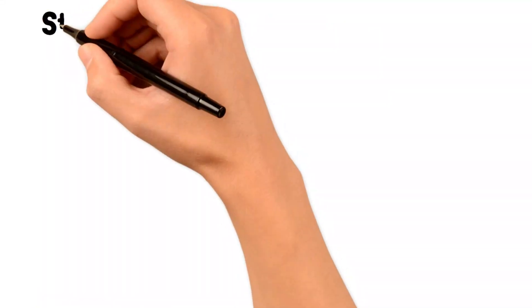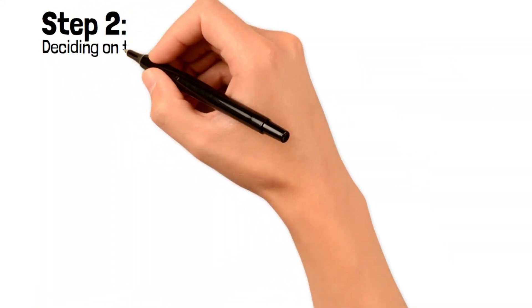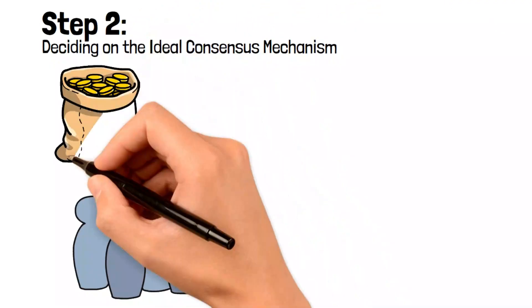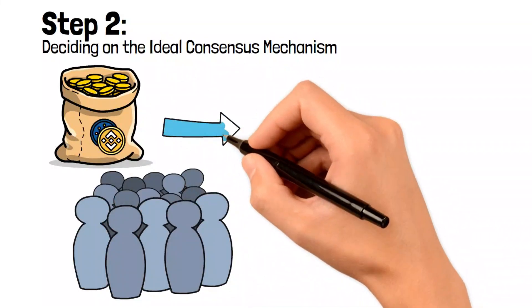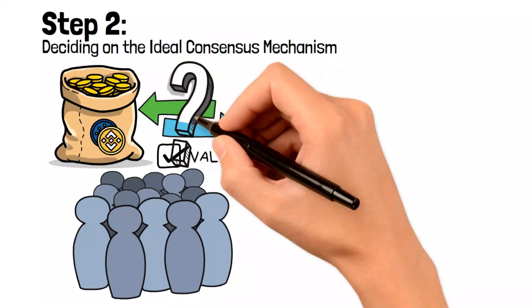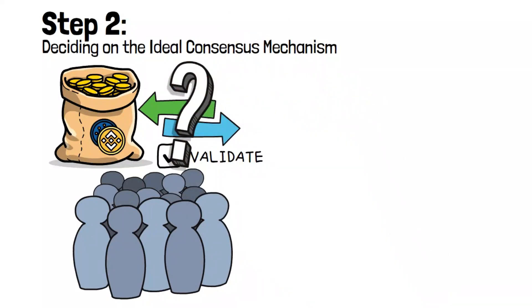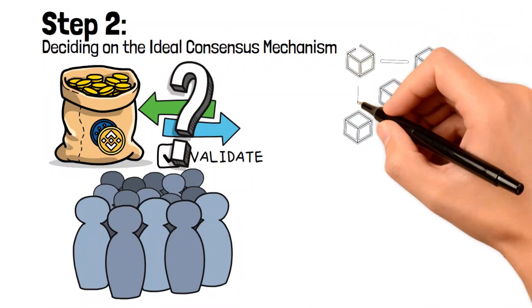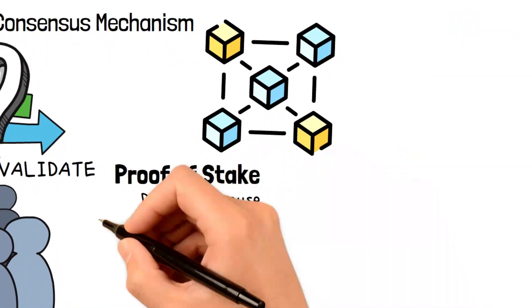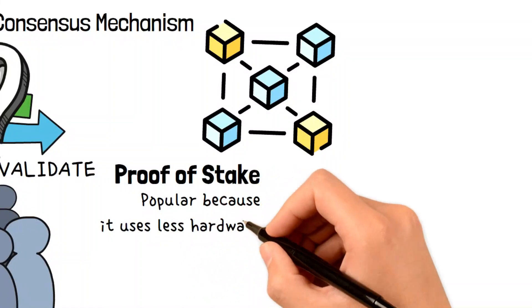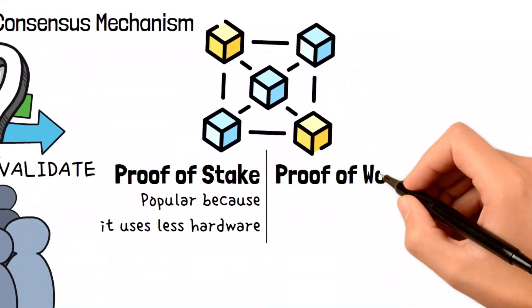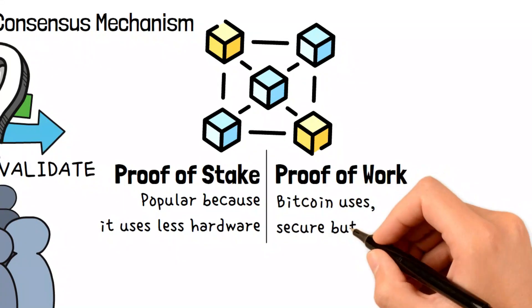Step Two: Deciding on the ideal consensus mechanism. When creating your own blockchain or unsure which one to choose for your token, think about how participants will confirm and validate transactions on this network. This process is called the consensus mechanism. Many blockchains use proof of stake, which is popular because it requires less hardware and has various versions. However, some people consider proof of work, like Bitcoin uses, to be more secure, but it can be costly to maintain and not very eco-friendly.